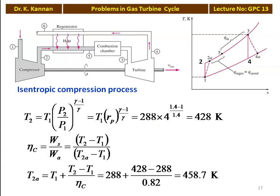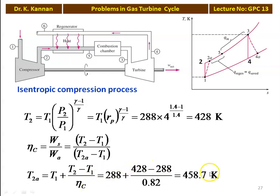Now we define the compressor efficiency. By definition, eta_C equal to isentropic work divided by actual work, which in terms of temperature is (T2 minus T1) divided by (T2a minus T1). We calculate T2a from this equation: T2a equal to T1 plus (T2 minus T1) divided by efficiency of the compressor. Substituting numerical values: 288 plus (428 minus 288) divided by 0.82 equal to 458.7 Kelvin.